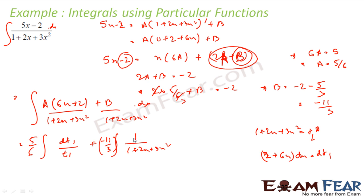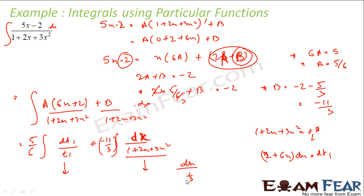The first part integrates to (5/6)·log|t1|, i.e., log|1+2x+3x²|. For the second part with b = -11/3, I convert 1+2x+3x² into the form k²+t² by completing the square. This gives a form like (x + 1/3)² + (√2/3)², and then I can apply the tan inverse formula.